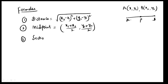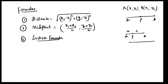The second formula is the section formula — it is compulsory. Section formula has two parts: first, internal division — line segment AB with point P dividing it in ratio M to N internally. Second, external division — line segment AB with point P dividing it into M parts and N parts externally.